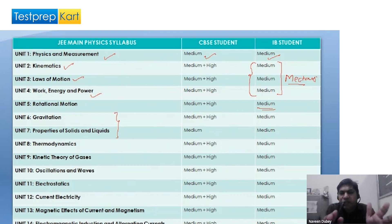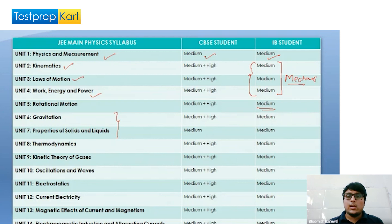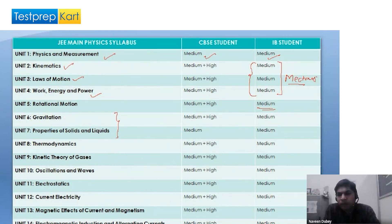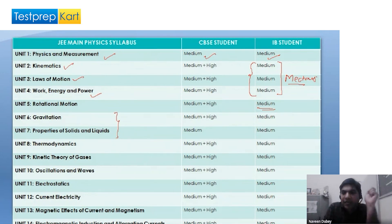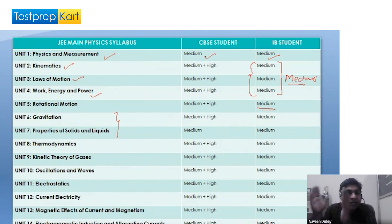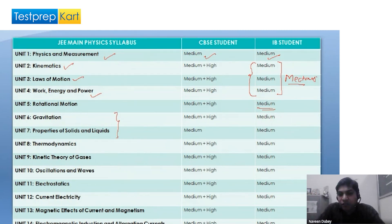IB questions are more or less analytical — based on graphical analysis or data analytics. In JEE Mains, a concept is given and a student is supposed to produce a graph based on that concept. In IB, a graph is already given and the student has to draw information from that graph. So there is a very fundamental difference between these two curriculums.